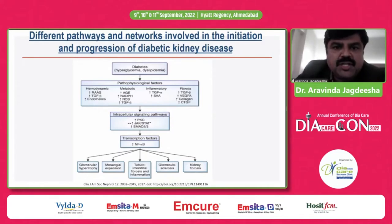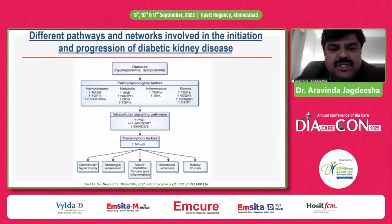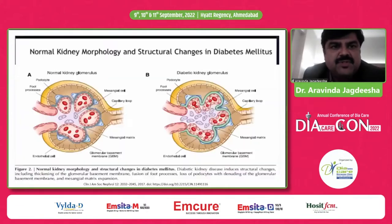The pathophysiological factors include increased RAS, increased TGF, increased AGE, increased TGF-alpha, and increased TGF-beta, leading to intercellular signaling pathways, increased PKC, and increased transcription factors like NF-κB, leading to glomerular hypertrophy, mesangial expansion, tubulointerstitial fibrosis and inflammation, glomerulosclerosis, and kidney fibrosis.